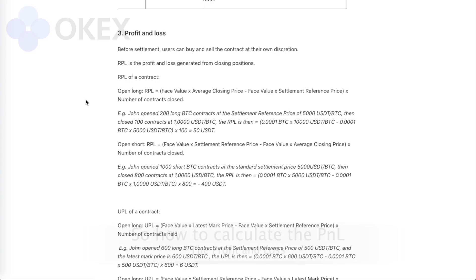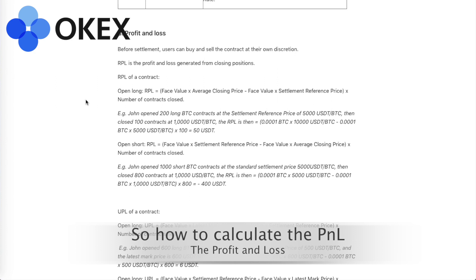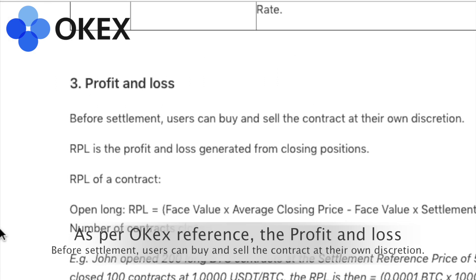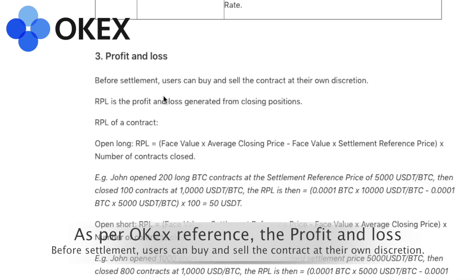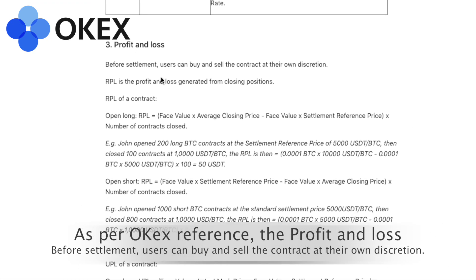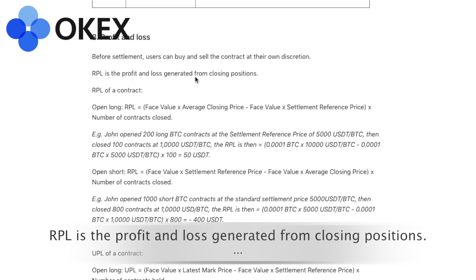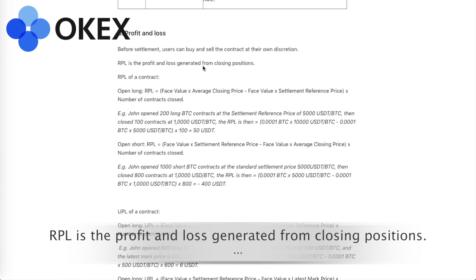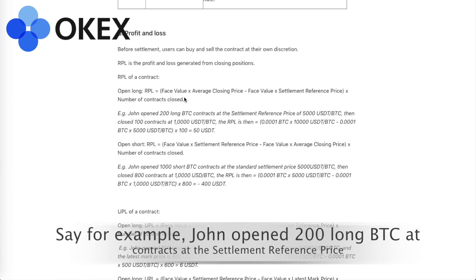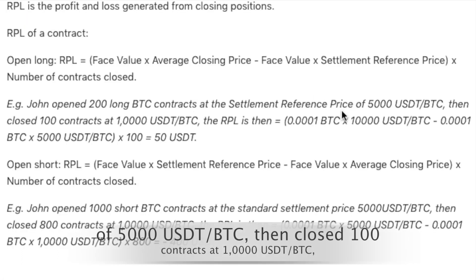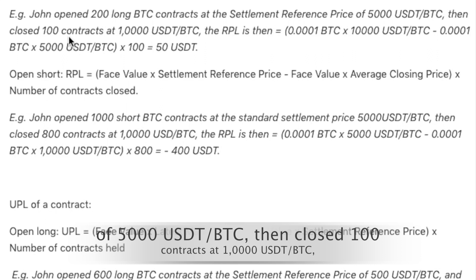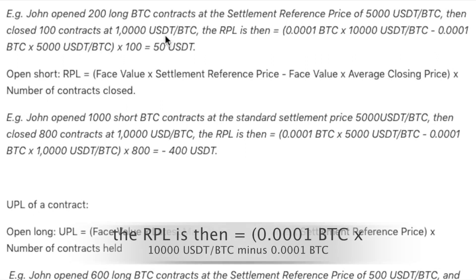Let's go now to the OPEX platform and look at how to calculate the PNL — the profit and loss. As per the OPEX reference, users can buy and sell contracts at their own discretion. The RTL, or realized profit and loss, is the profit and loss generated from closing positions. For example, John opened 200 long BTC contracts at the reference price of 5,000 USDT per BTC, then closed 100 contracts at 10,000 USDT per BTC.